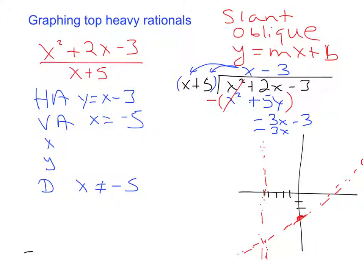So if I set my numerator equal to 0, I'm going to have to factor that guy. So if I factor this, I'm going to get x minus 1 and x plus 3. All I did was factor my numerator.